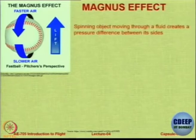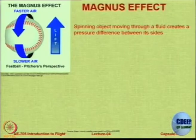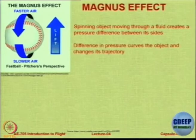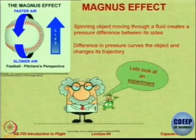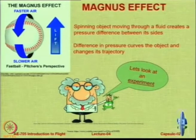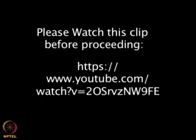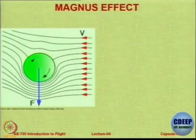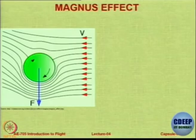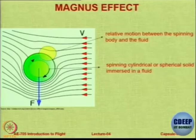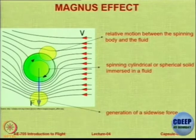The Magnus effect is an effect that acts on balls or bodies that are spinning. When a spinning body moves through a fluid, there is a pressure difference. Because of the spin there is a pressure difference, there will be motion in one direction and therefore the trajectory of the spinning object will change. There will be motion towards the direction in which the ball is being spun.